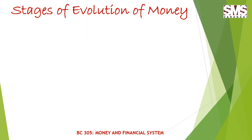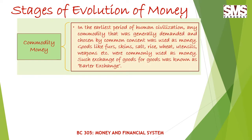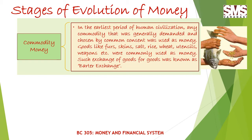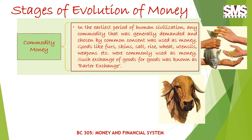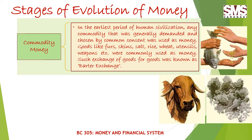The first stage includes commodity money. In the earliest period of human civilization, any commodity that was generally demanded and chosen by common consent was used as money. Goods like furs, skins, salt, rice, wheat, utensils, weapons, etc. were commonly used as money. Such exchange of goods for goods was known as barter exchange. As you can see in the image, goods like salt, cow, and fish were exchanged against rice or wheat.